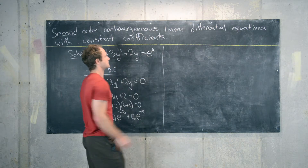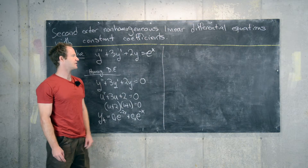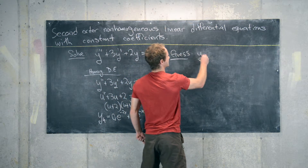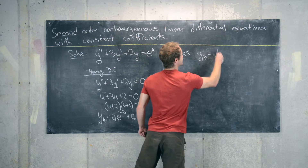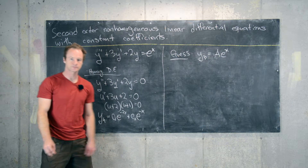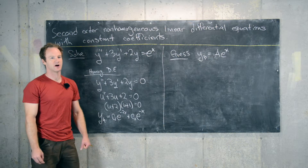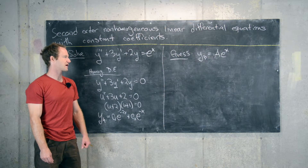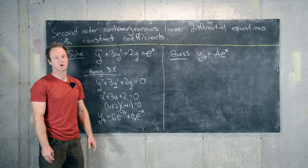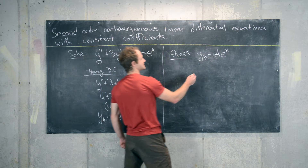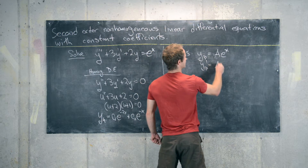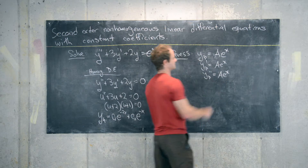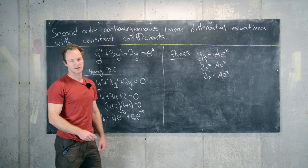Because exponential functions close under taking derivatives, a good guess for the particular solution would be some constant times e to the x. This strategy is called the method of undetermined coefficients. So let's guess yp equals A e to the x, where A is an undetermined constant. That gives us yp prime equal to A e to the x, and yp double prime equal to A e to the x — there's nothing really going on there, it's easy to take the derivatives.